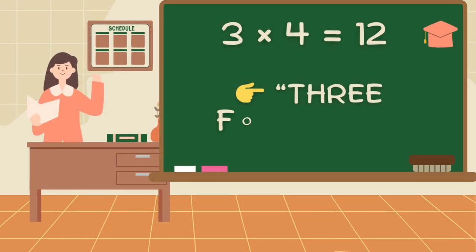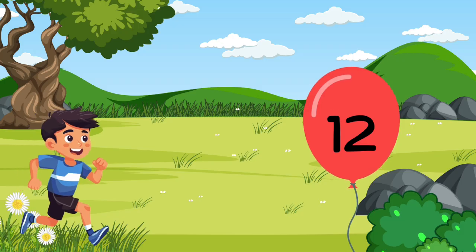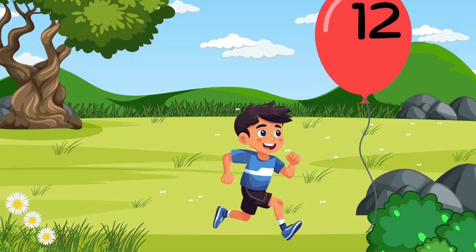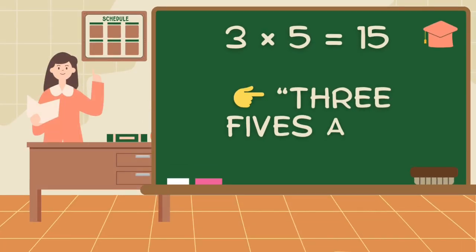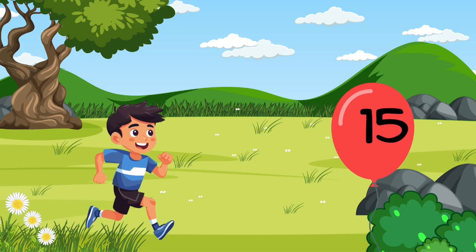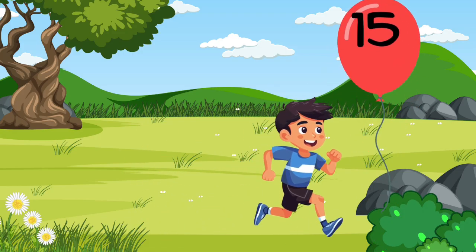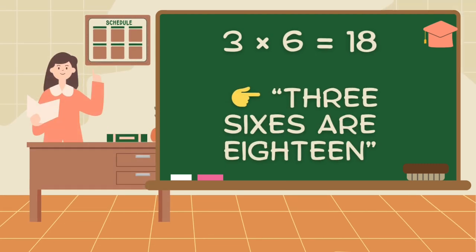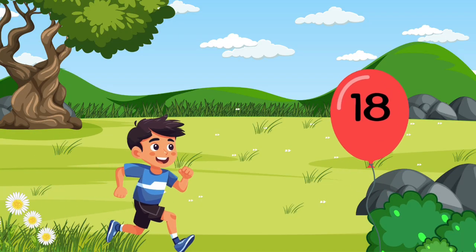Three fours are twelve. Three fives are fifteen. Three sixes are eighteen.